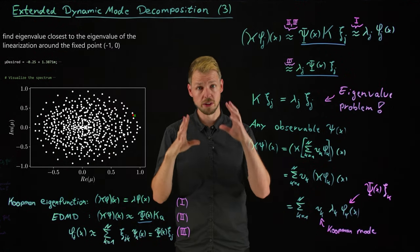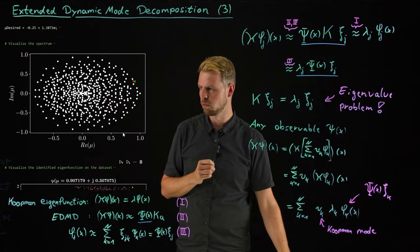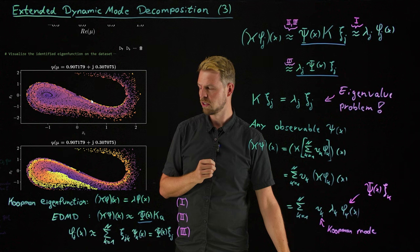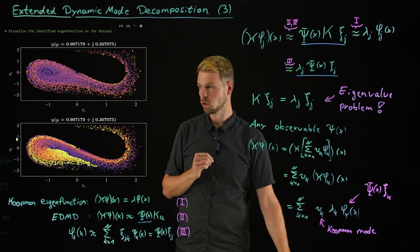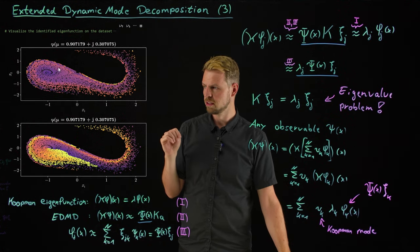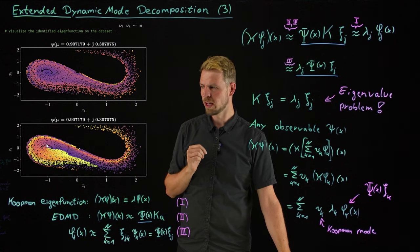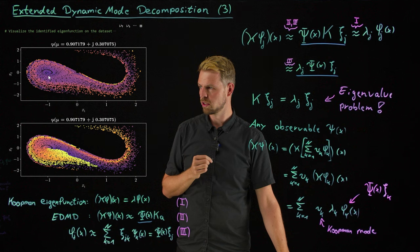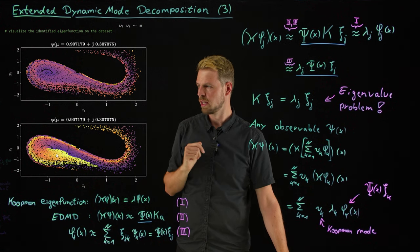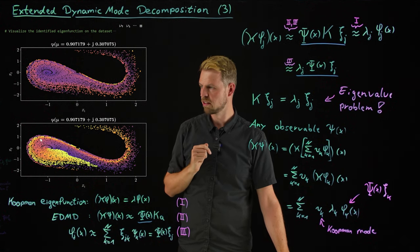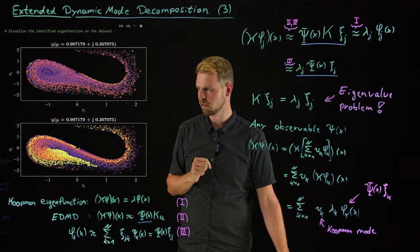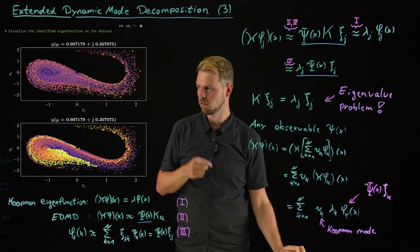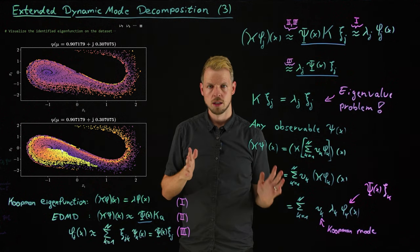Comparing the computed eigenvalue spectrum against the known analytical eigenvalues of the linearization at the left fixed point, one eigenvalue (green) closely matches the analytical solution (red). The corresponding eigenfunction's absolute value shows a basin of attraction converging to the fixed point, while the phase reveals a spiraling (circling) dynamics with 2-pi periodicity — directly capturing the spiraling behavior.